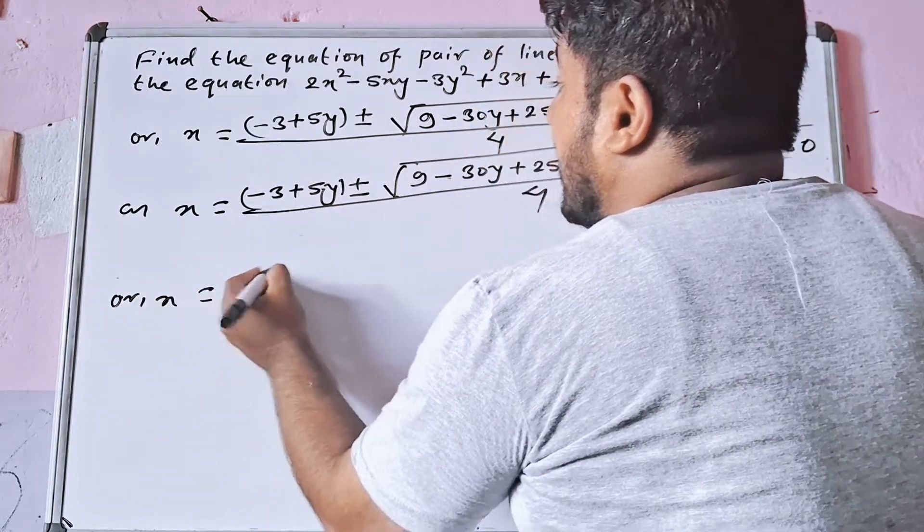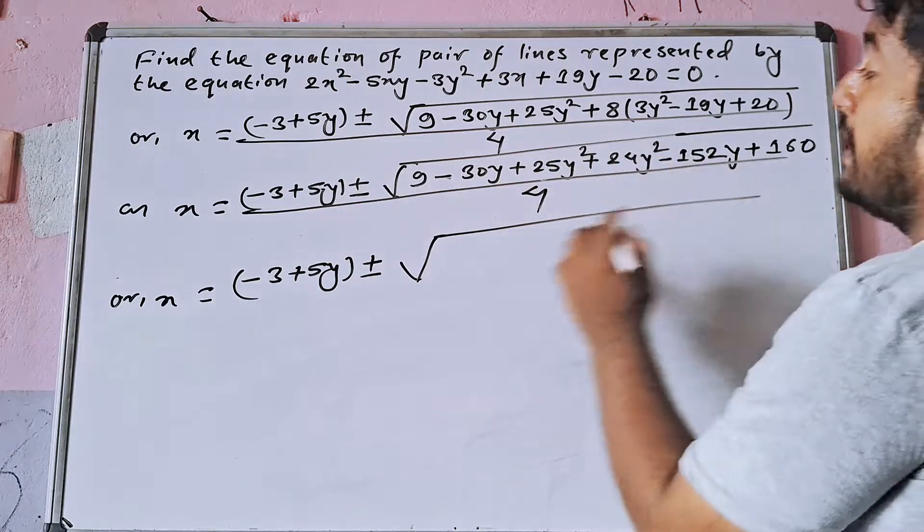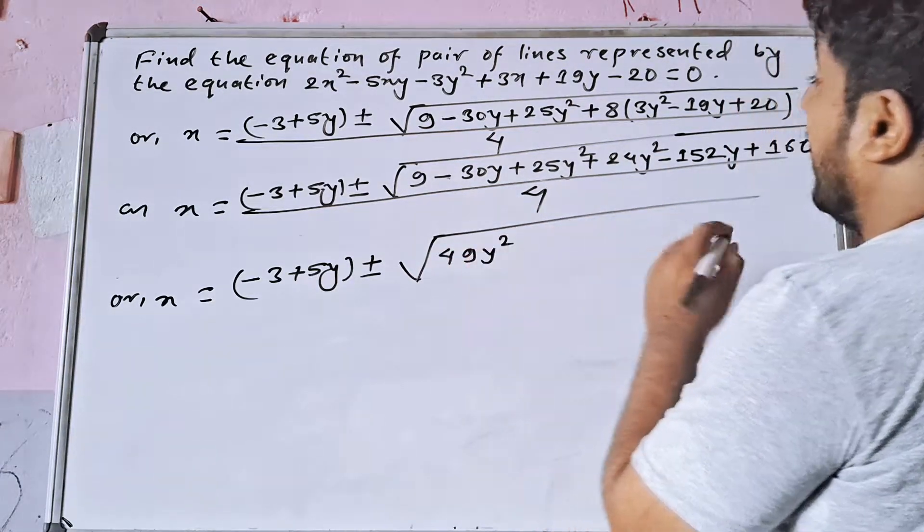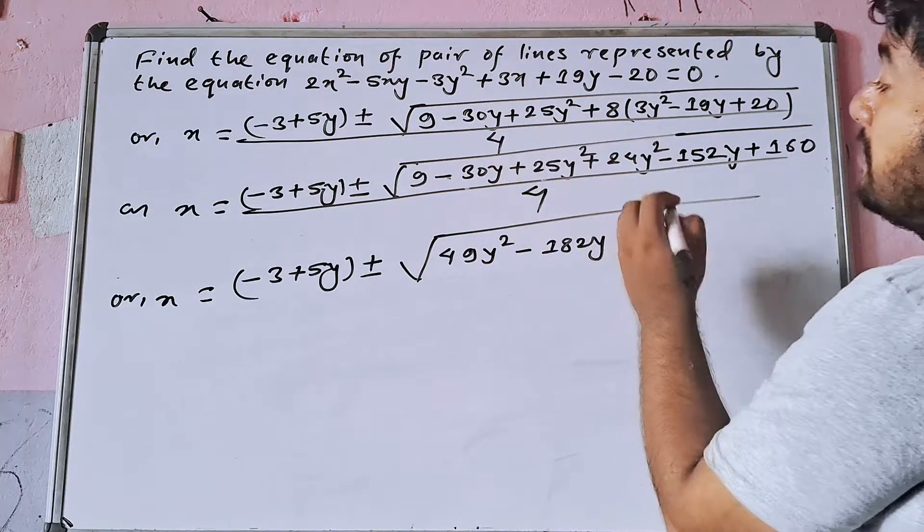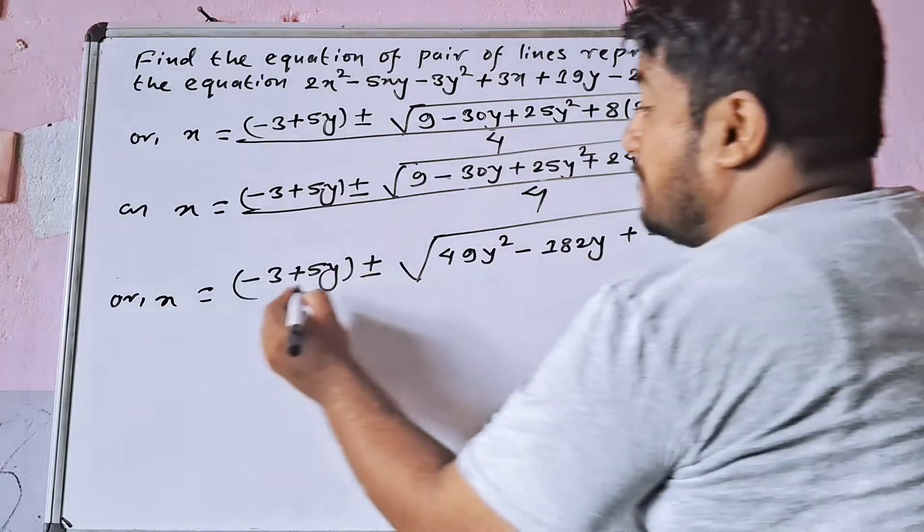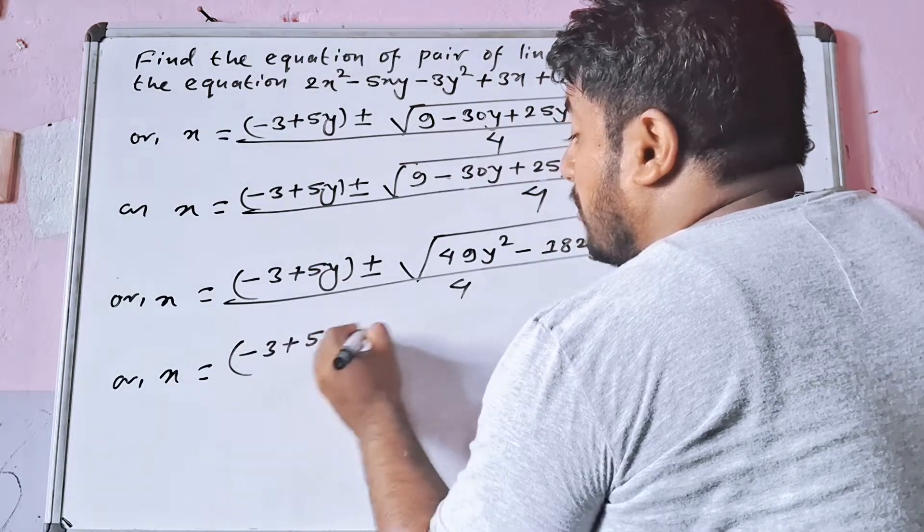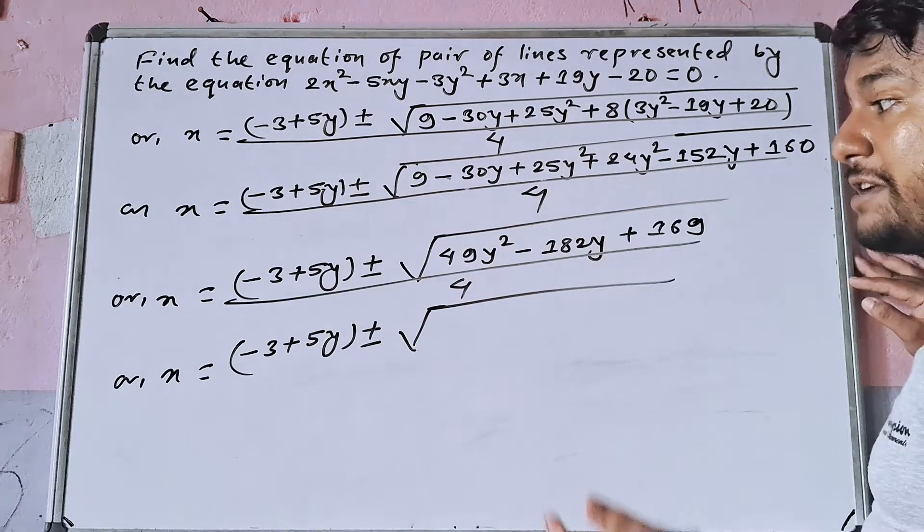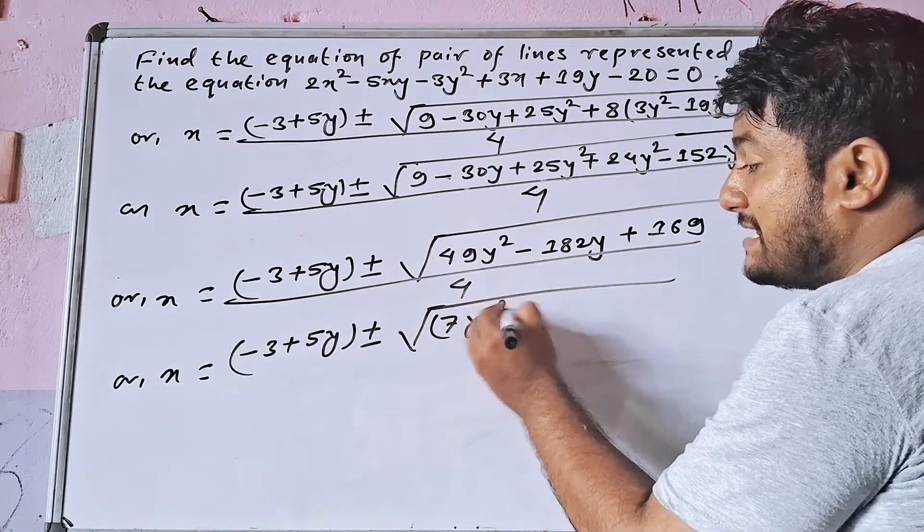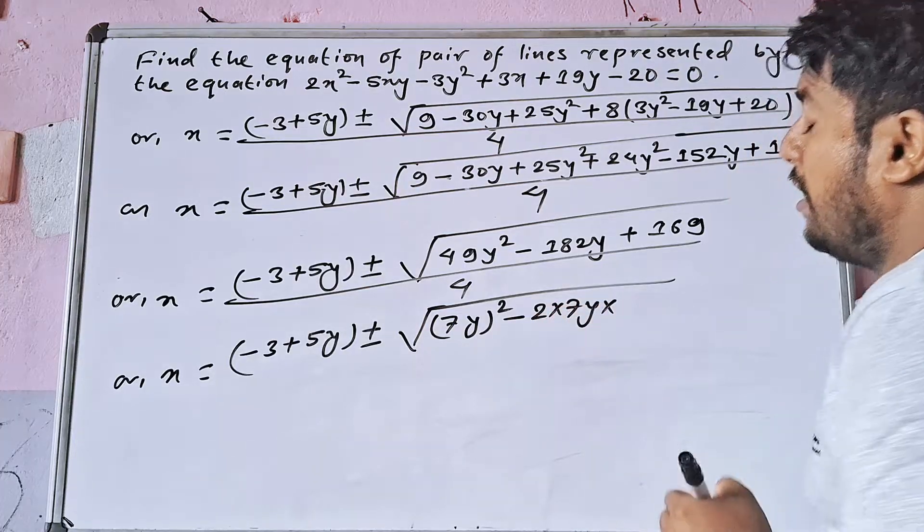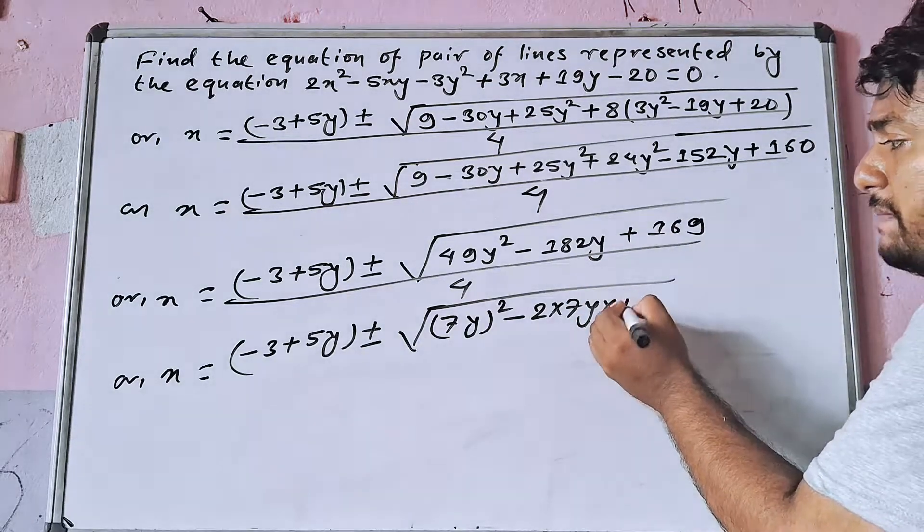x is equal to minus 3 plus 5y plus minus root under 49y square minus 182y plus 169, whole divided by 4. This is 7y square minus 2 into 7y into 13 plus 13 square.